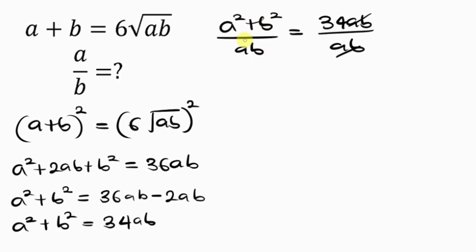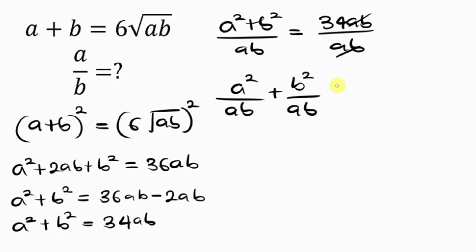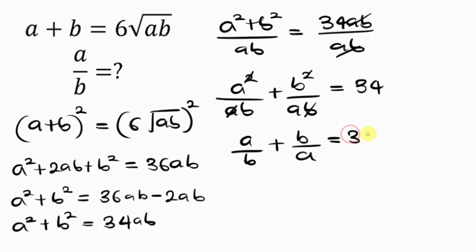On the left-hand side I split the fraction: a squared over ab plus b squared over ab equals 34. One a cancels in the first term giving a over b, and one b cancels in the second term giving b over a. So I have a over b plus b over a equals 34. Notice that b over a is the inverse of a over b, which can also be written as 1 over (a over b).